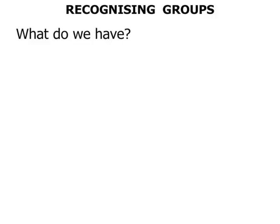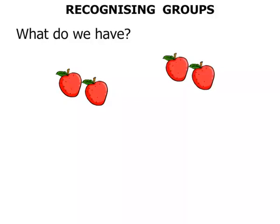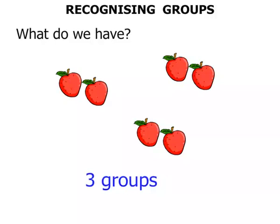What do we have? We've got some strawberries certainly. Some more strawberries there. Some more strawberries again. We've got three groups. But we're going to add a little bit more information — how many in each group? There's two strawberries. So we've got three groups of two. There's two in each group.